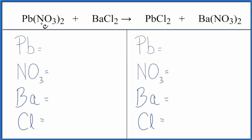In this video, we'll balance the equation Pb(NO3)2 plus BaCl2. That's lead nitrate plus barium chloride.